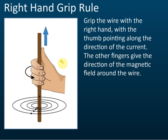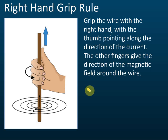For the right-hand grip rule, as the name suggests, use your right hand — not your left. Many students are right-handed and in the exam they put down their pen and accidentally use their left hand to find the field direction. Make sure you use the right hand. Imagine gripping the wire with your right hand; the thumb points in the direction of the current.